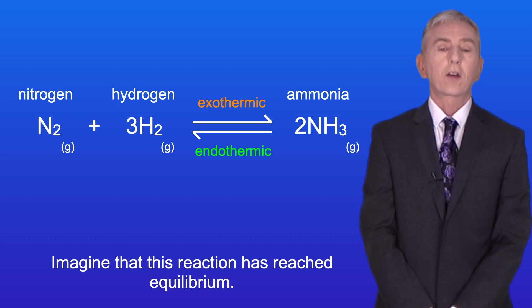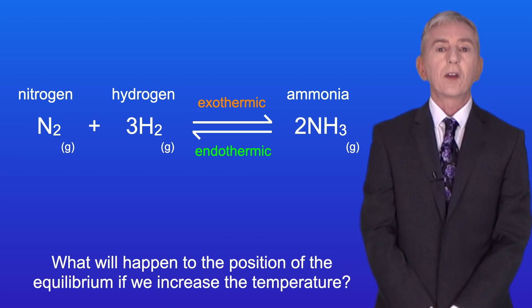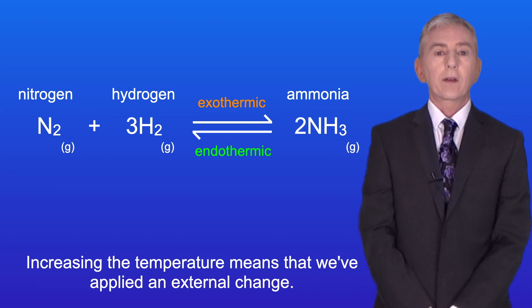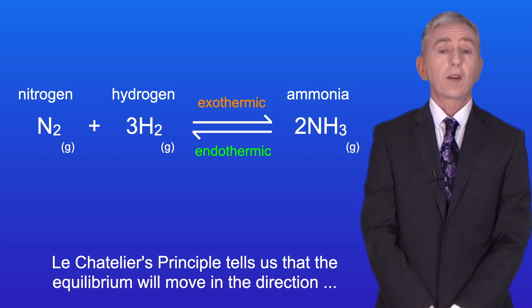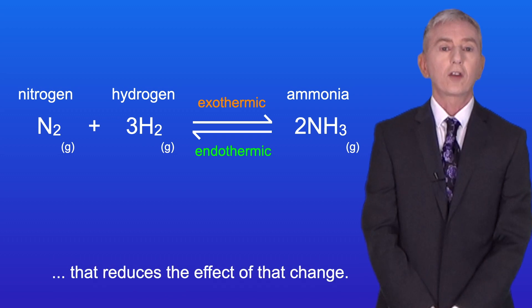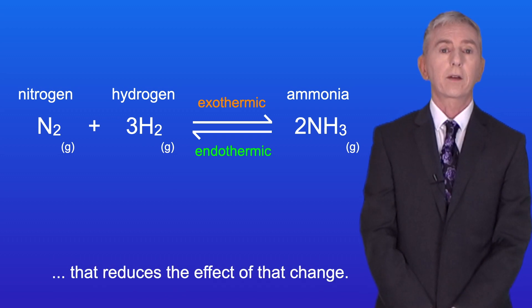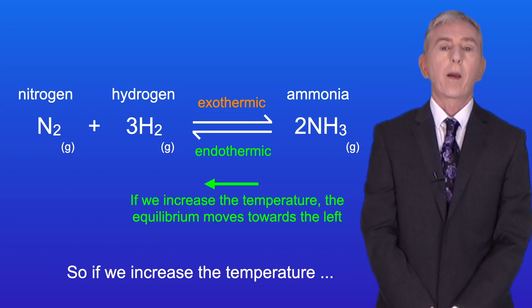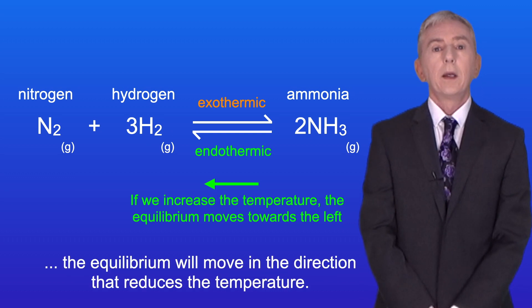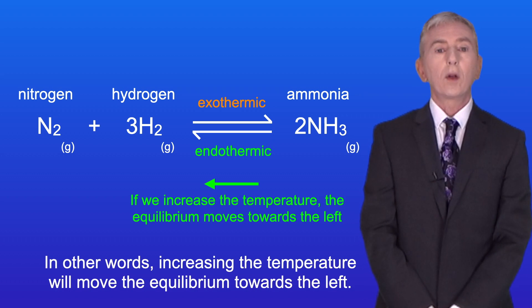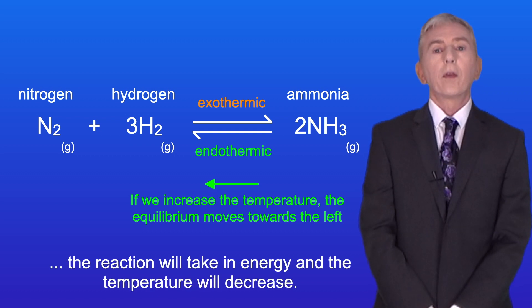So imagine that this reaction has reached equilibrium. What will happen to the position of the equilibrium if we increase the temperature? Well, increasing the temperature means that we've applied an external change. Le Chatelier's principle tells us that the equilibrium will move in the direction that reduces the effect of that change. So if we increase the temperature, the equilibrium will move towards the left. Because the reverse reaction is endothermic, the reaction will take in energy and the temperature will decrease.